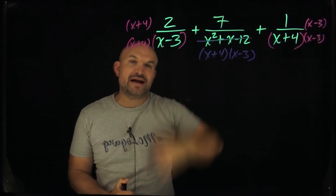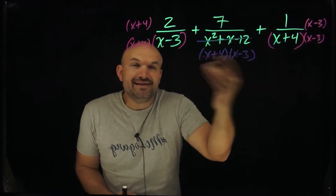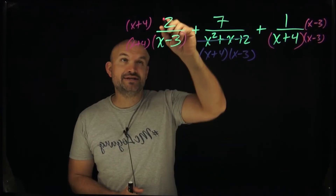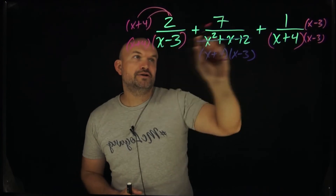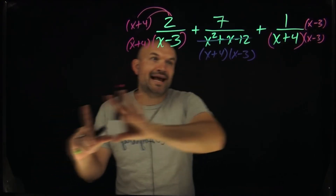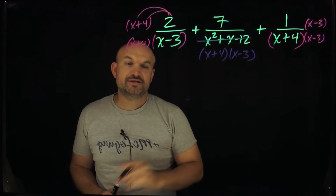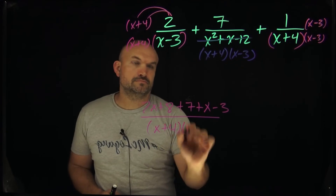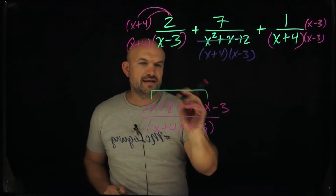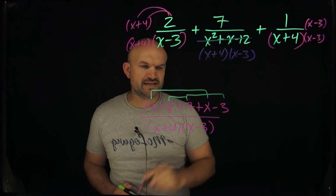When you recognize something you can factor, factor it — I just made my life a whole bunch easier by identifying the LCD because it was already there within the problem; it just wasn't obvious until I simplified the expression. Now to simplify the numerator I need to distribute the 2. I don't need to do anything with the 7, and distributing 1 just gives me x minus 3. So let me rewrite all of my simplified numerator over the common denominator (x + 4)(x − 3).